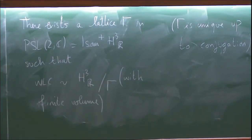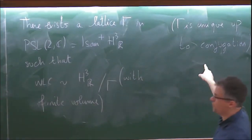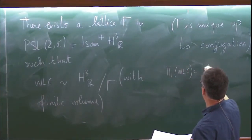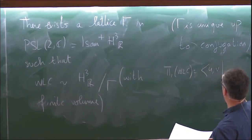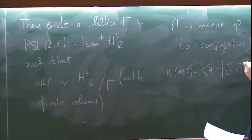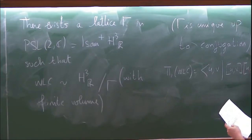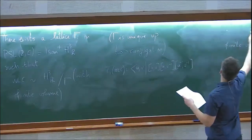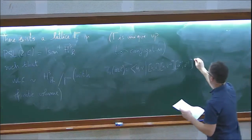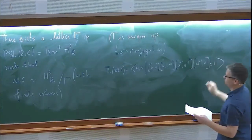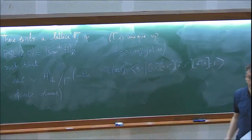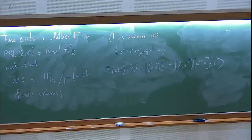For fun, the fundamental group of the Whitehead link complement is generated by u and v with the relation that the product of commutators [u,v][u⁻¹,v] equals the identity — so you have two elements and a product of two commutators equaling one. And gamma here can be taken as a subgroup of finite index of PSL(2,Z[i]).